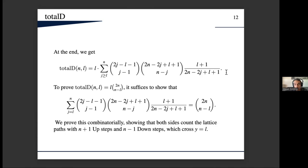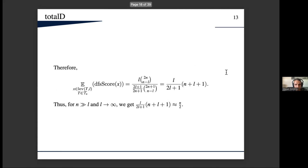We prove that identity combinatorially, giving interpretations of both sides with some lattice paths here. An interesting remark is that basically if both l and n approach infinity and n is bigger than l asymptotically, then roughly the expected DFS score is n over 2 regardless of l, which is interesting.